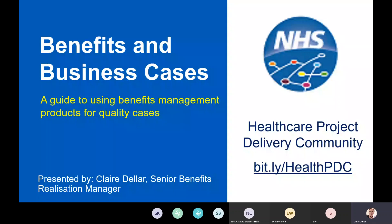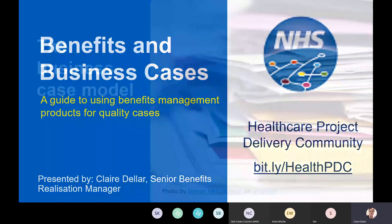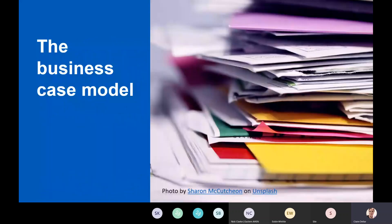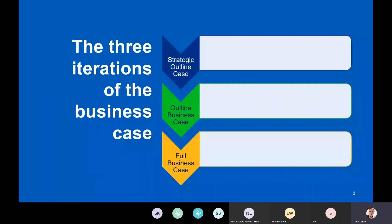We'll start with an overview of what the business case model is. The Treasury sets up three stages of a business case — three iterations. They're not completely new documents each time; each version builds on the previous. They start with the strategic outline case, the purpose of which is to determine whether what you're investigating is a problem, need, or opportunity that the organisation really needs to fix.